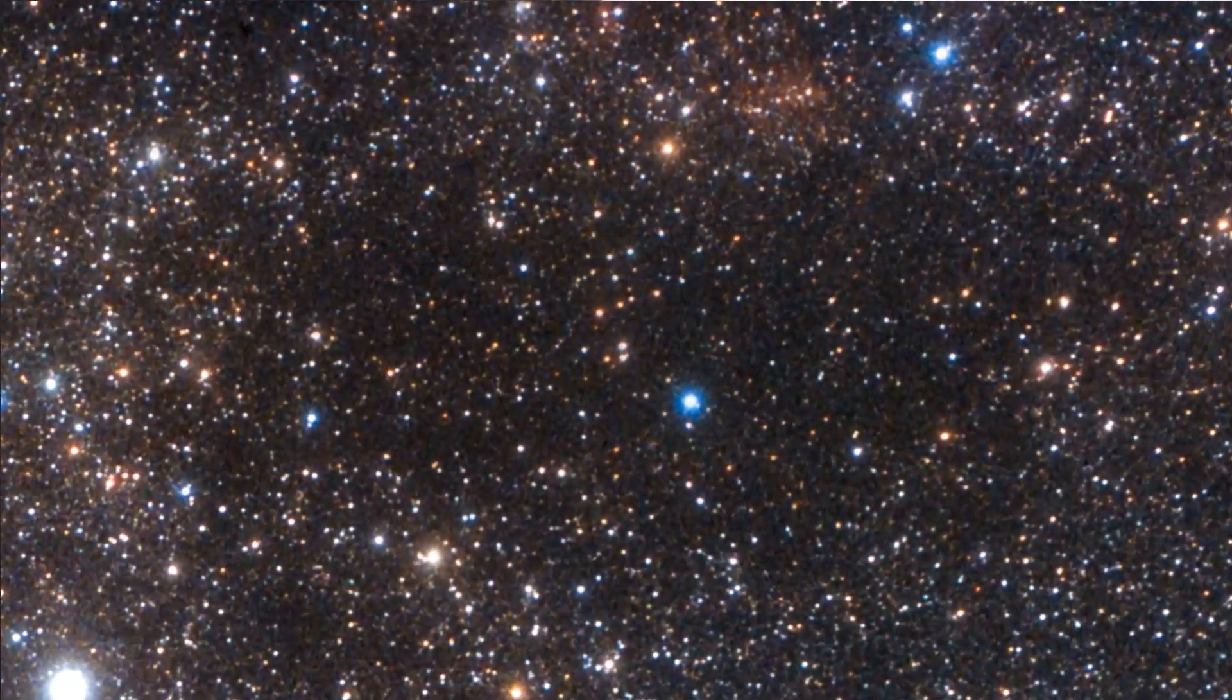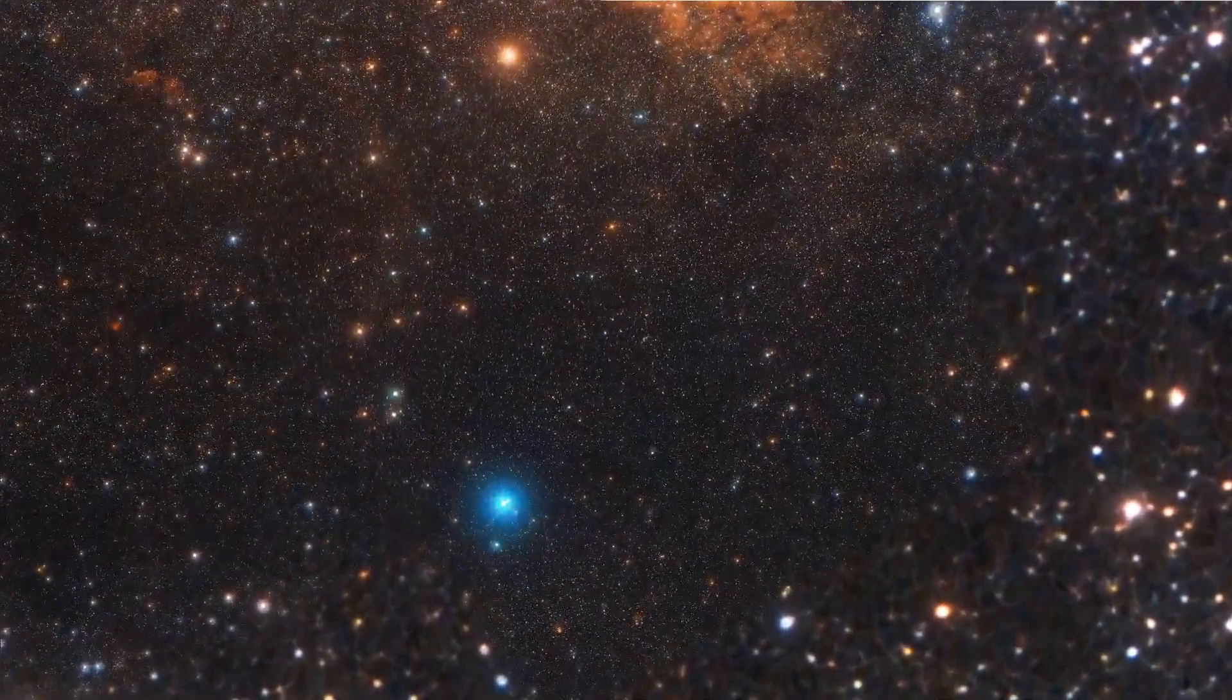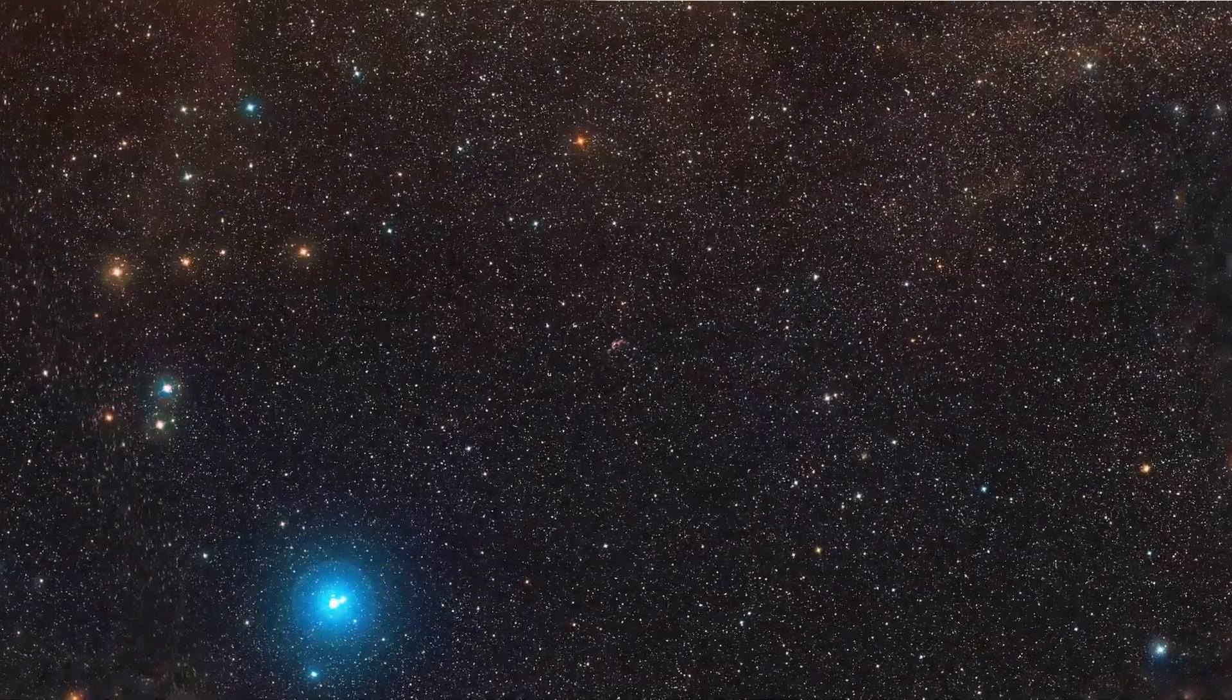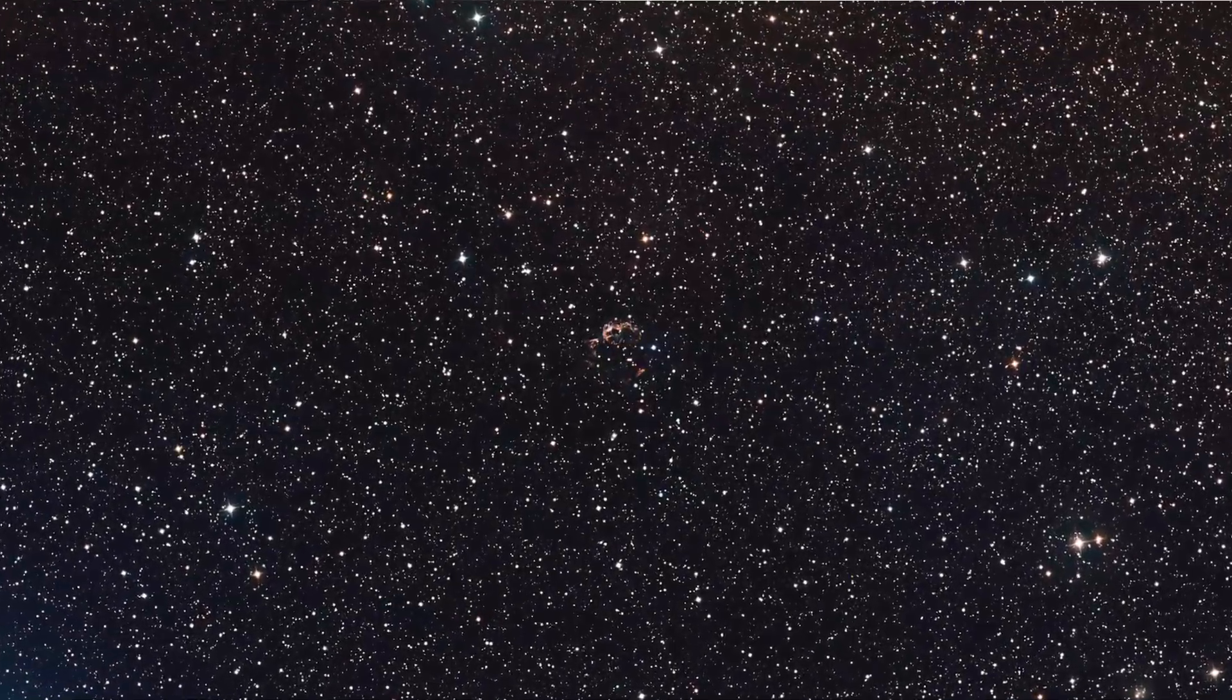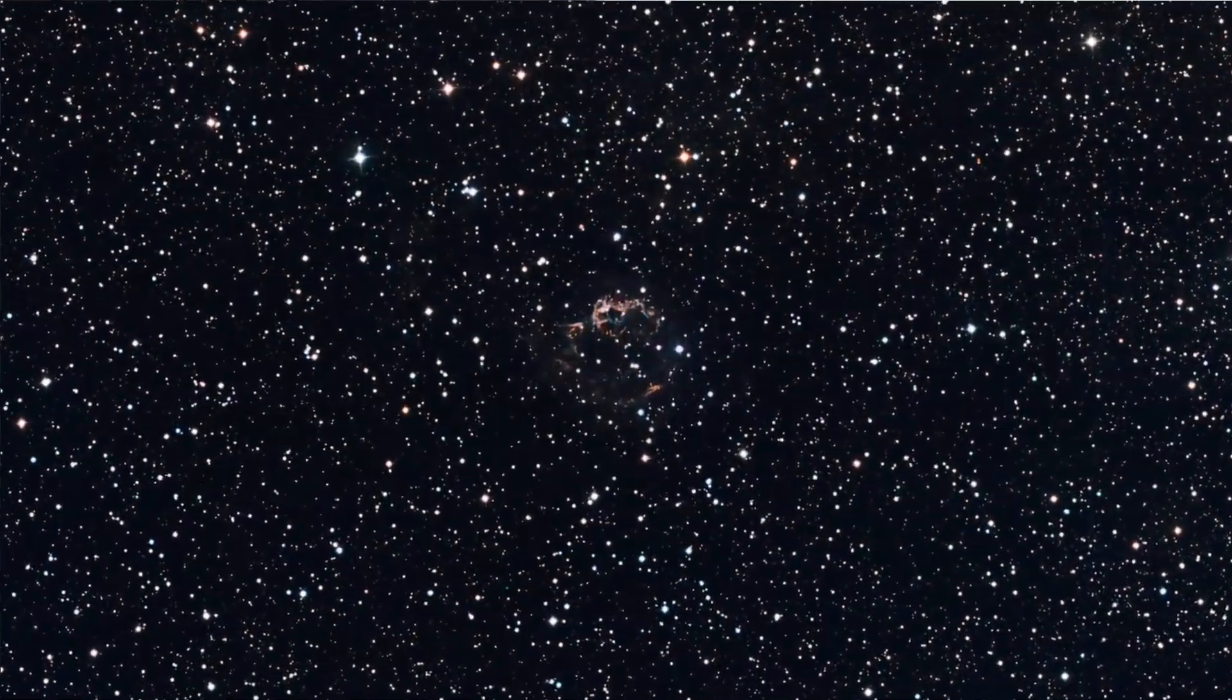It begins with a ground-based photo by the late astrophotographer Akira Fujii. As it zooms into a smaller portion of the sky, it fades into an image from the Digital Sky Survey.